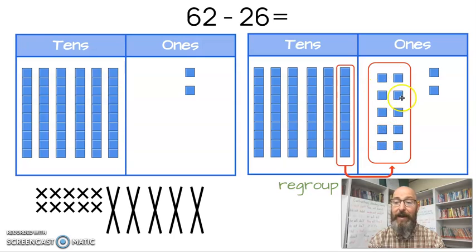One, two, three, four, five, six, seven, eight, nine, ten. Once I've done that, I can subtract. Now I'm taking away 26. Six ones, two tens. So I'm going to take away my two tens. Let's take away my ones first.